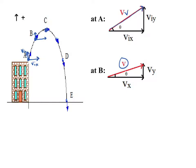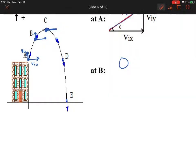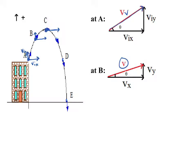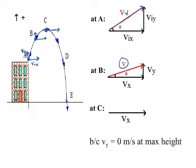At point C — the tallest point — remember from horizontal projectiles that when something was just going horizontal, there was no y velocity. The same thing is happening here: this is when y velocity changes direction. My x velocity is going to be about the same, but at this highest point we have no motion in the y direction, because the y direction is going from upwards to downwards — it instantaneously goes to zero. At C, there is no velocity in the y direction, which means it's at its maximum height.